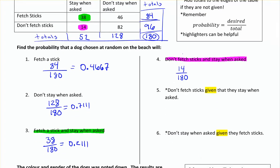In the first table, looking at our hints again: what's the probability that a dog does not fetch sticks given that they stay when asked? Think of this as a hint — you don't have to pick out of all 180 dogs anymore, only out of the ones that stay when asked. So that becomes the bottom of the fraction. Those that stay when asked total 52. Out of those 52, how many do not fetch sticks? We can see 14. So 14 out of 52 gives a probability of 0.2692.